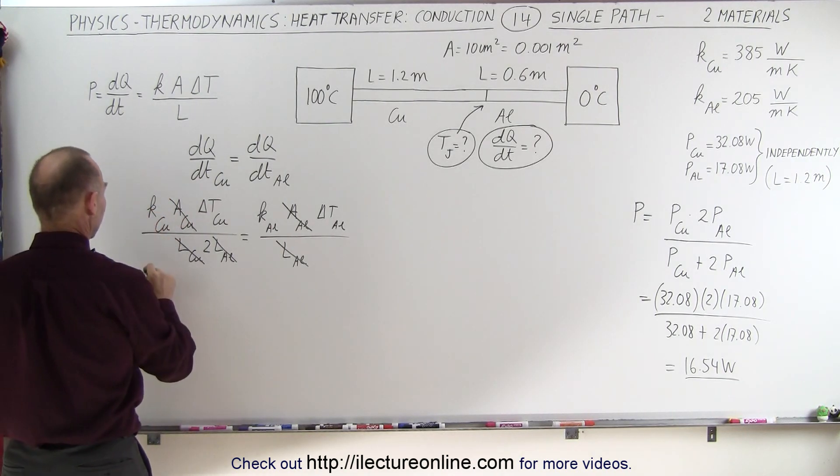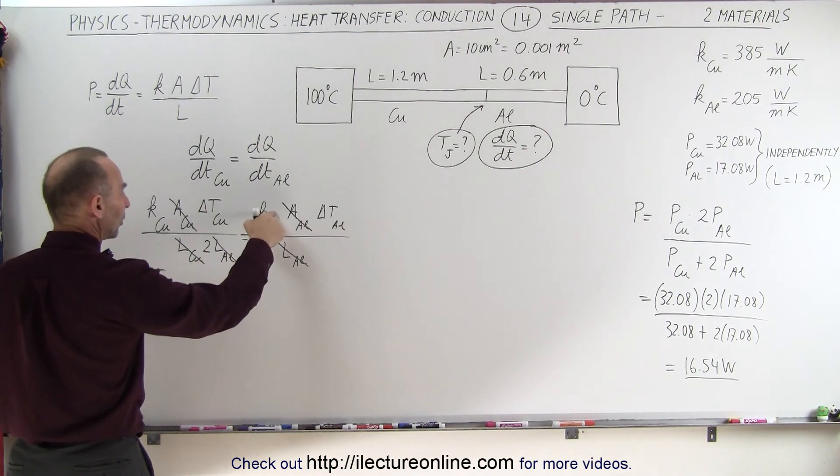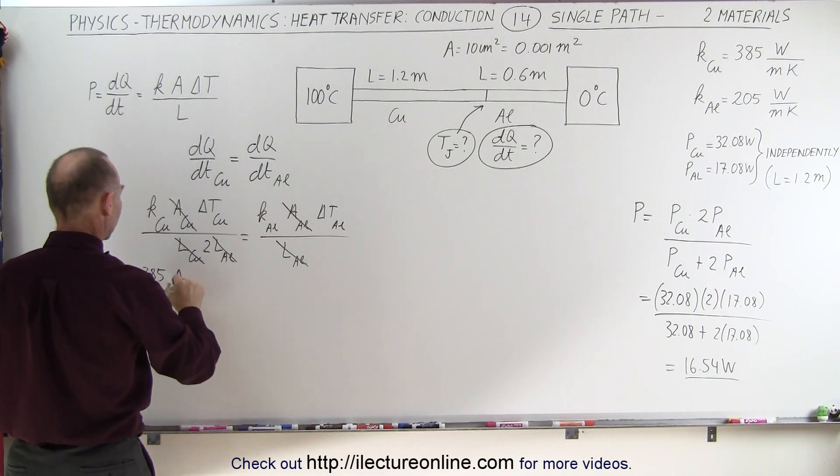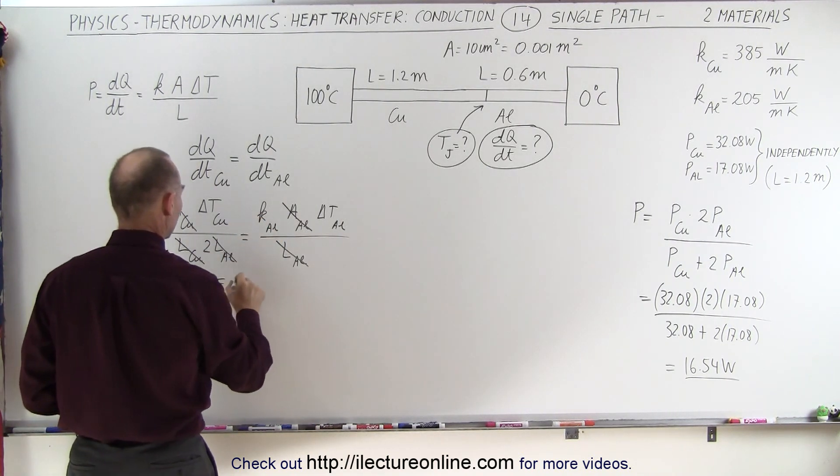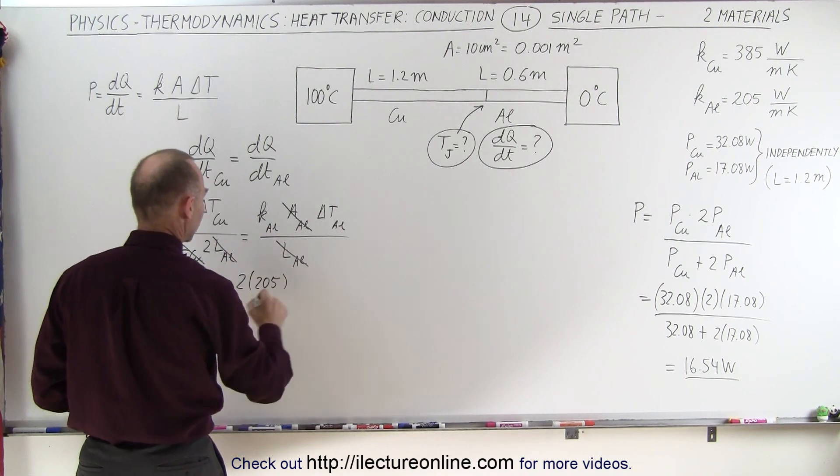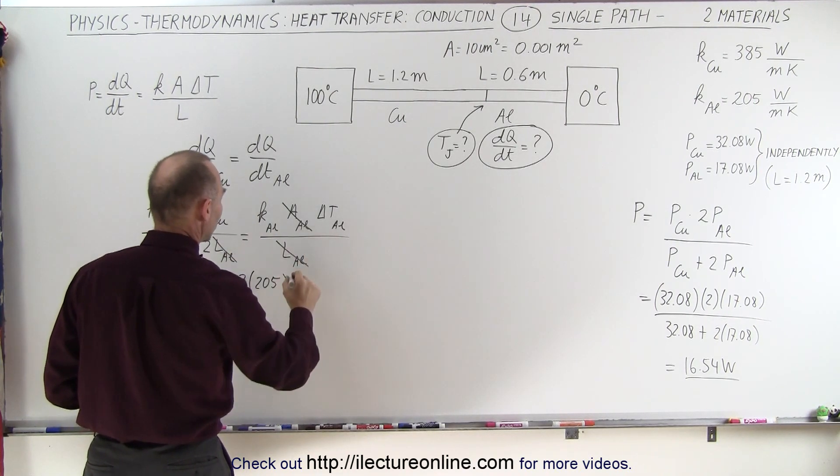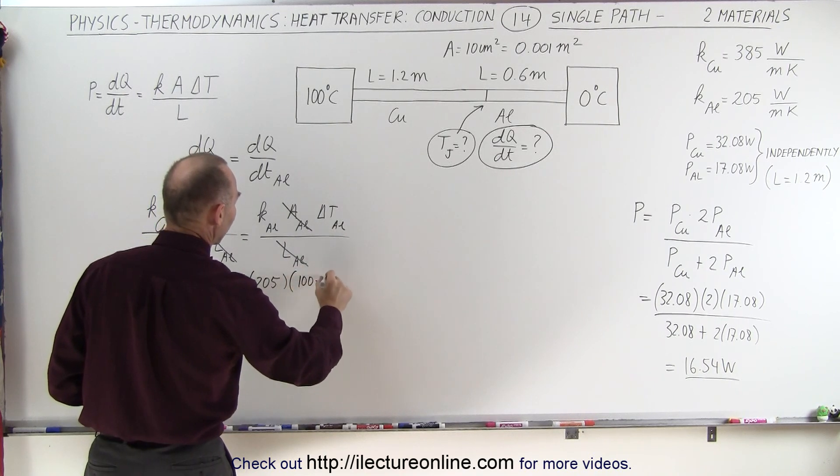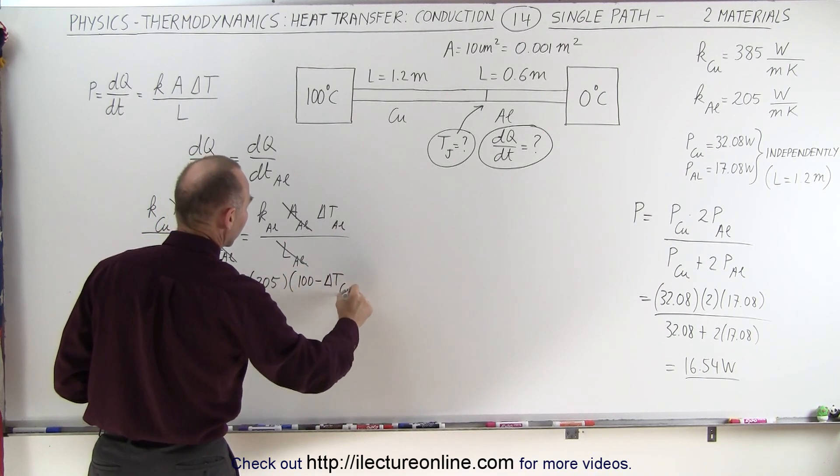We get 385, and then we can take the two and multiply it up here. So we have the delta T, and then that is equal to twice 205, because we moved the two over here, times the delta T of aluminum, which can be written as 100 minus the delta T of the copper.